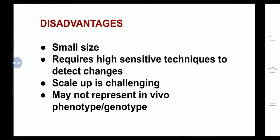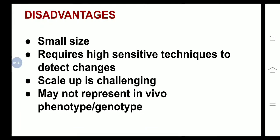Disadvantages: small size — they require high-sensitivity techniques to detect changes. Scale-up is very challenging — moving from laboratory conditions to the industrial level becomes very difficult. It might not represent the in vivo phenotype or genotype — what we have in culture may not literally mimic what we see in vivo. Phenotype is the external appearance of an organism; genotype is the genetic constitution of an organism.